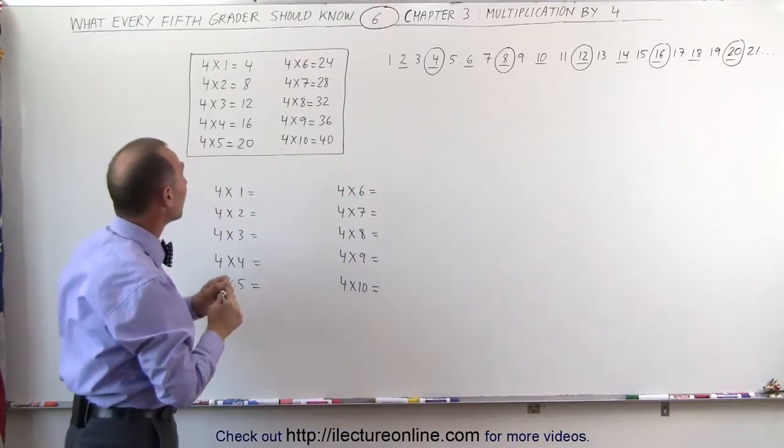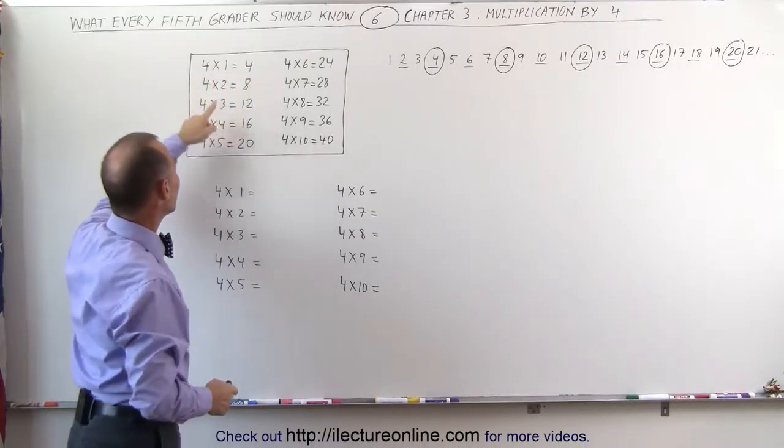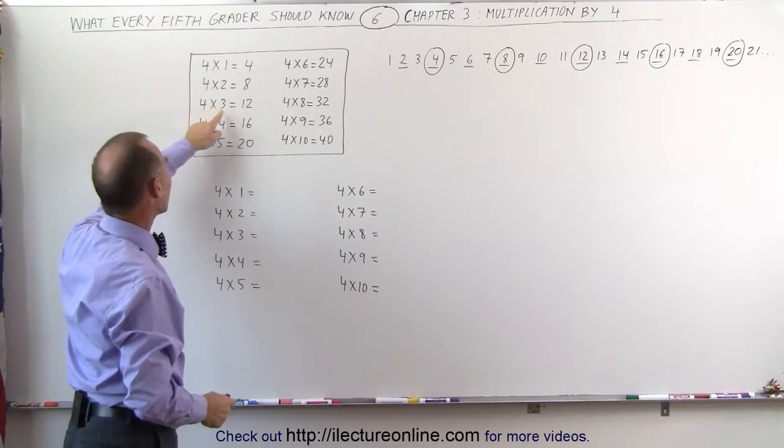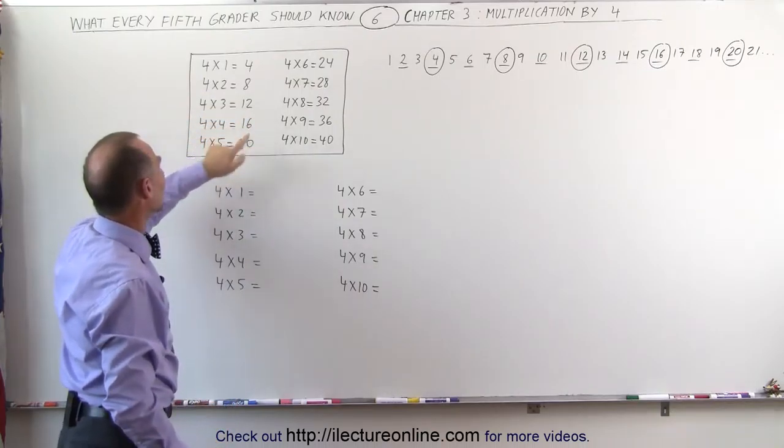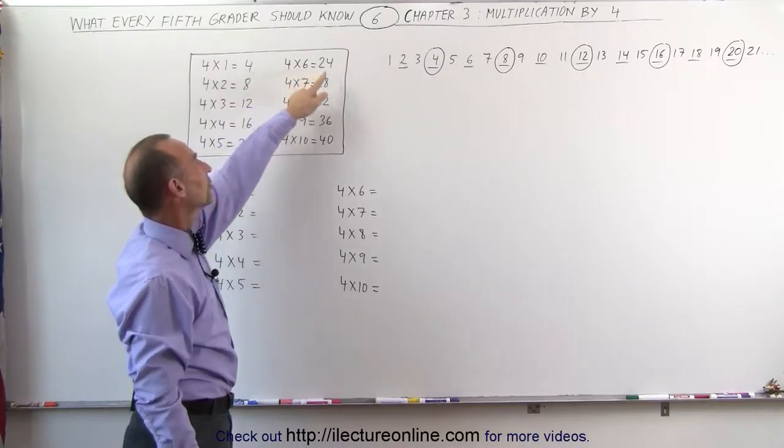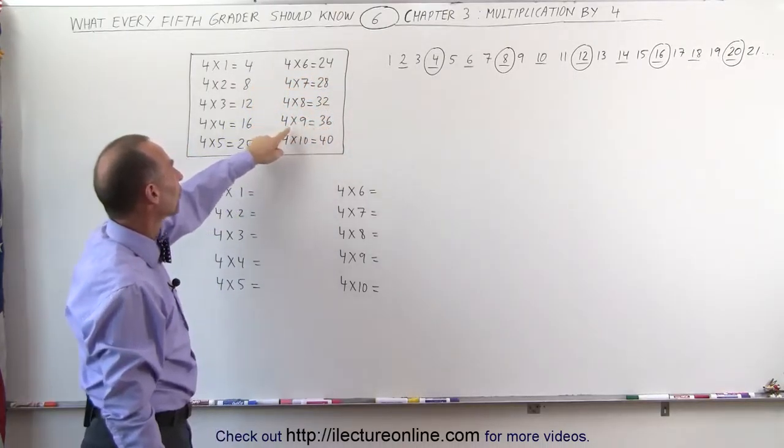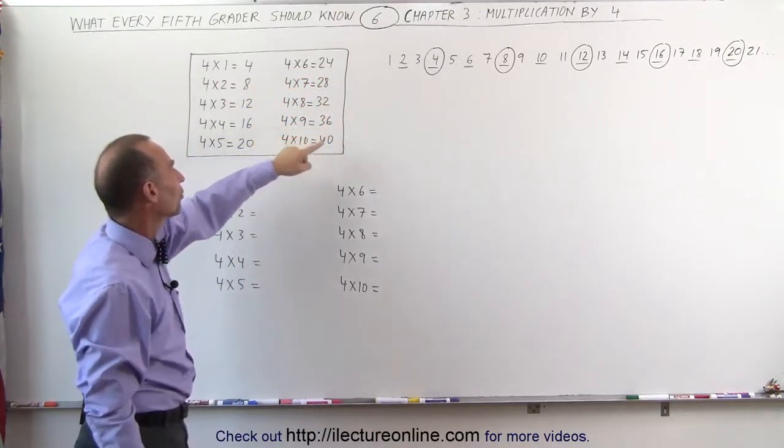4 times 1 is 4, 4 times 2 is 8, 4 times 3 is 12, 4 times 4 is 16, 4 times 5 is 20, and we continue on. 4 times 6 is 24, 4 times 7 is 28, 4 times 8 is 32, 4 times 9 is 36, and 4 times 10 is 40.